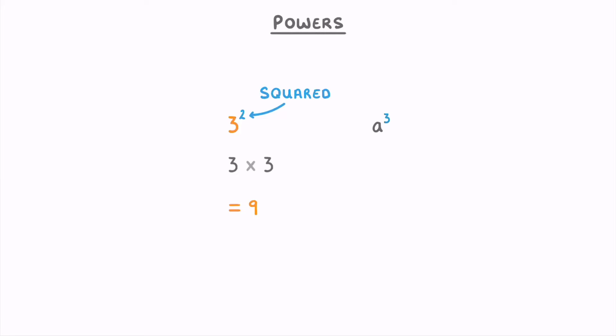Or for a to the power of 3, which we can call a cubed, we could write it as a times a times a. It's just that this is a lot longer and messier, so we generally keep it in the a cubed form.